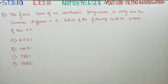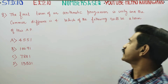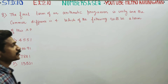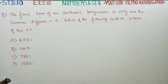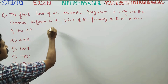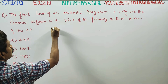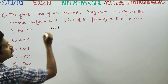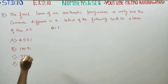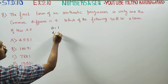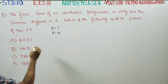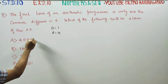Dear 10th standard students, in exercise number 2.10, sum number 8: the first term of an AP (arithmetic progression) is unity, A is equal to 1, and the common difference D is equal to 4. Which of the following will be a term of this AP?